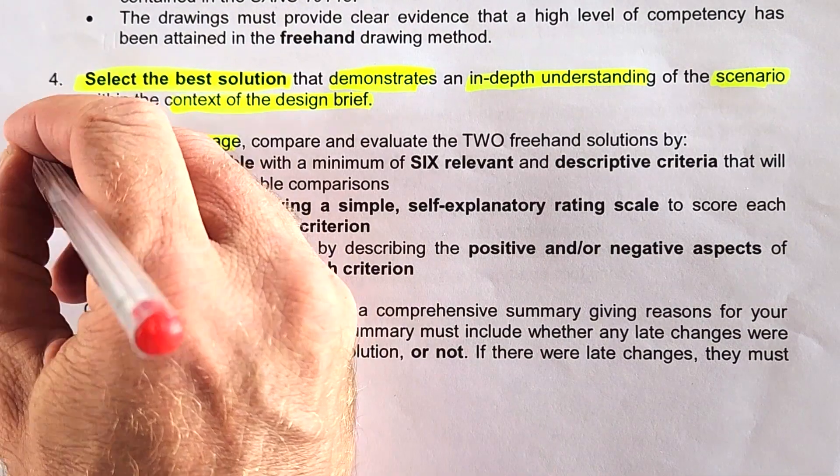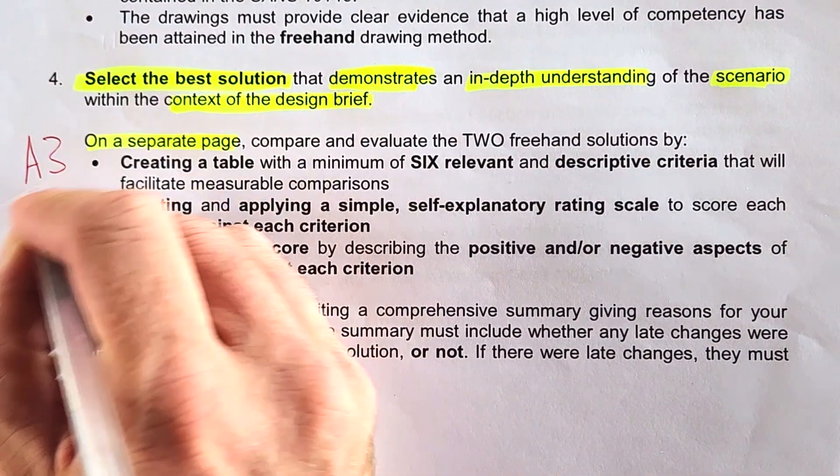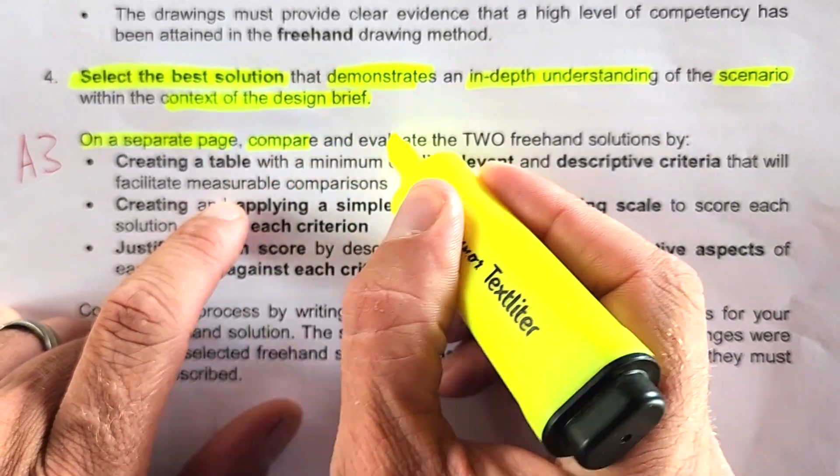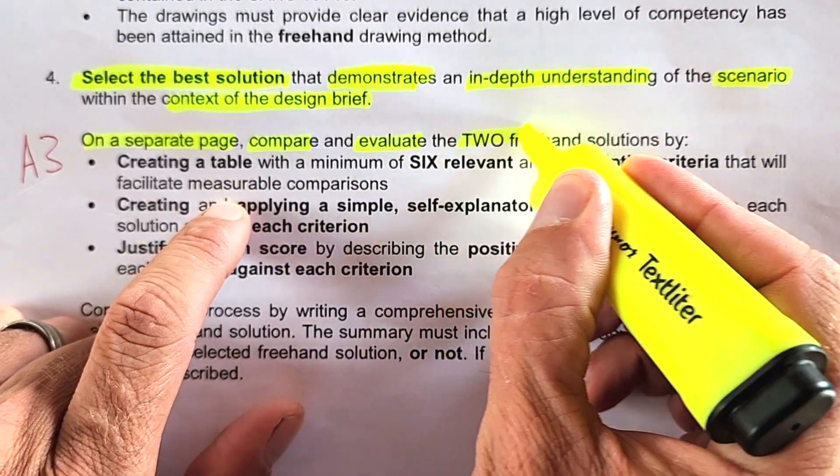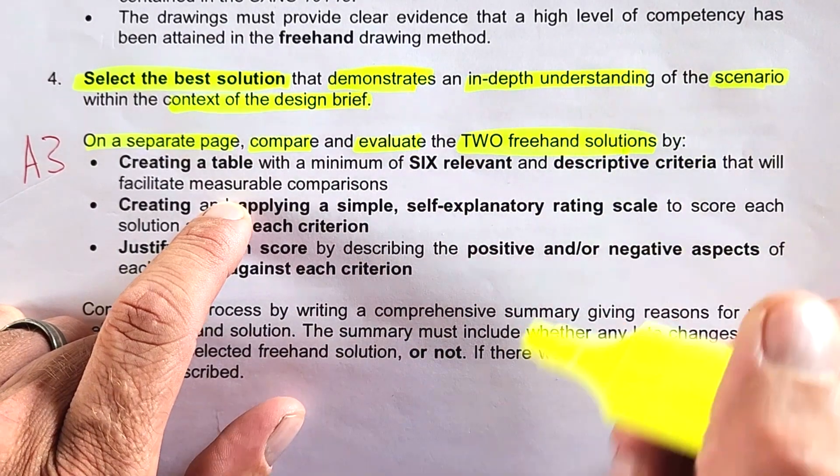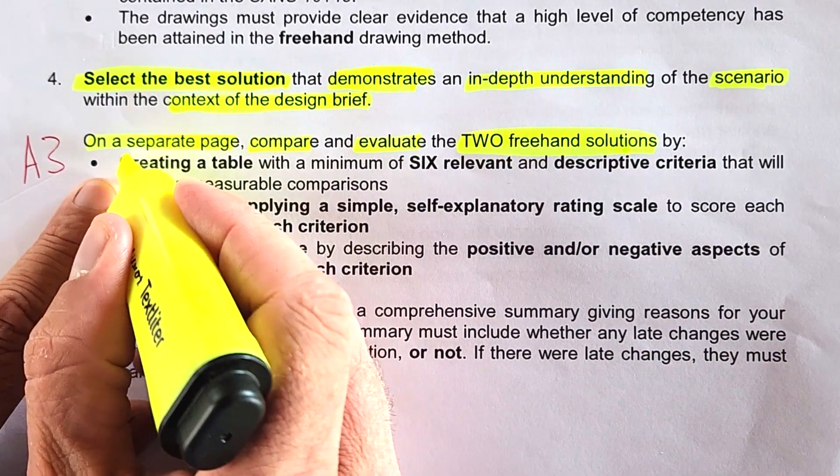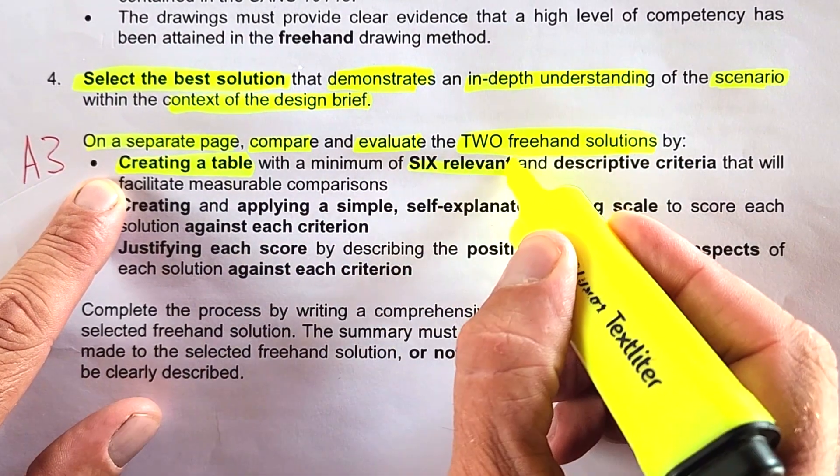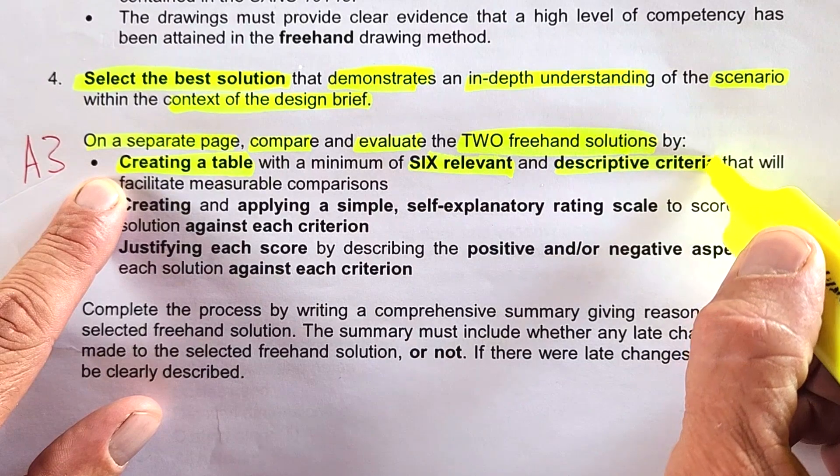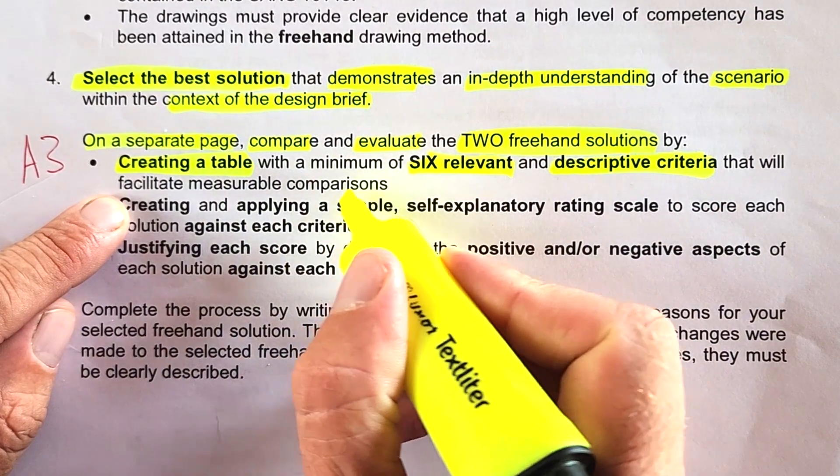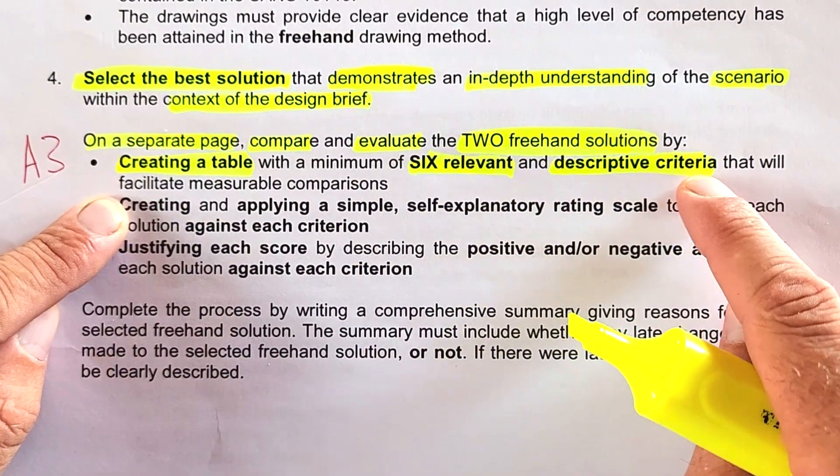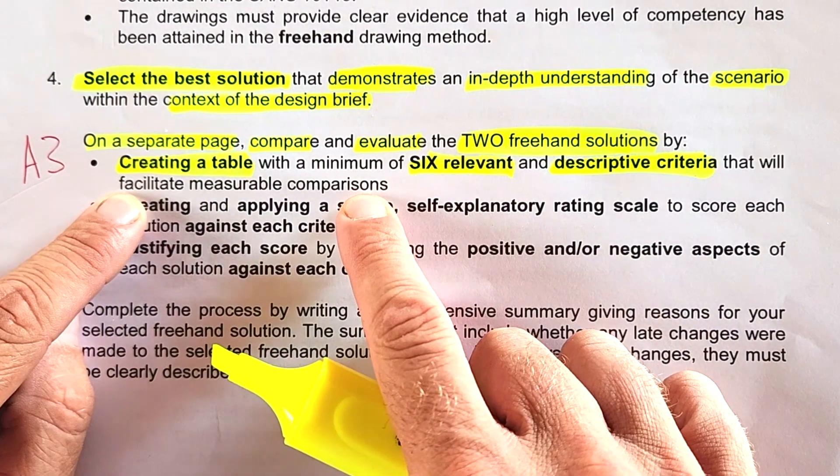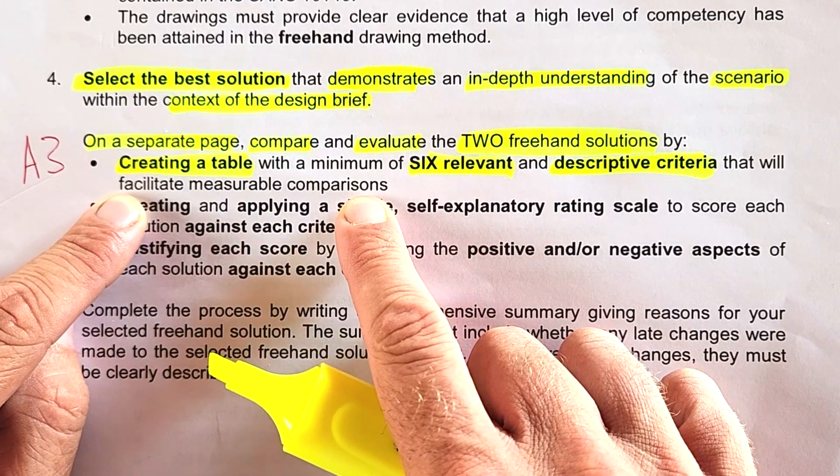You have to compare and evaluate the two freehand solutions you've just drawn. To do that, you're going to create a table with a minimum of six relevant descriptive criteria that will facilitate measurable comparisons. The descriptive criteria that they refer to as measurable comparisons you're going to find within your list of specifications and constraints.